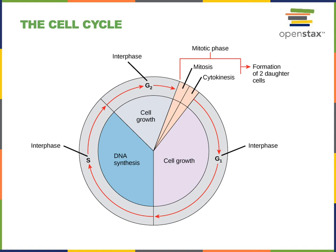The cell cycle goes through a sequence of phases, starting with the G1 phase, where cells typically spend the majority of their life growing and carrying out everyday functions. During the G1 phase, the cell can accumulate the nutrients that would be required to enter into the DNA synthesis process that occurs in S phase.